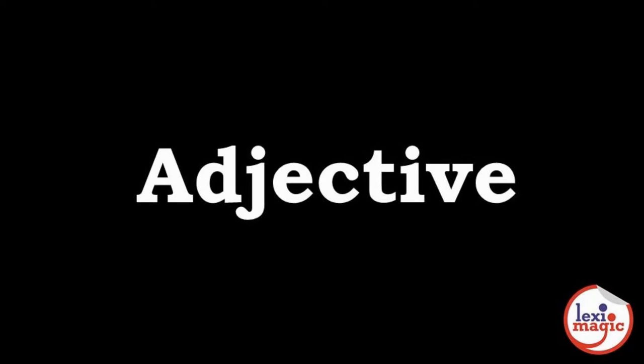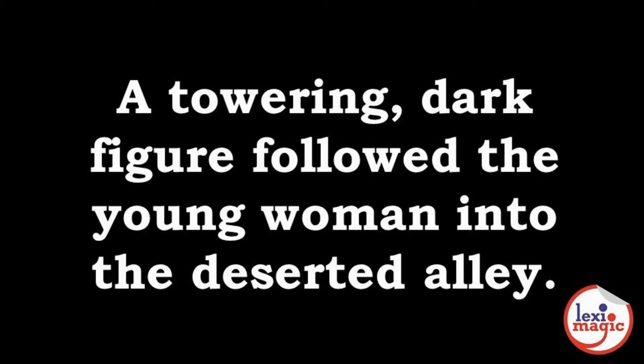An adjective modifies a noun or a pronoun. Adjectives give details about the noun or pronoun in a more precise manner. Example: 'A towering dark figure followed the young woman into the darkest alley.' In this example, the adjectives 'towering' and 'dark' explain the figure, 'young' explains the woman, and 'deserted' explains the alley.